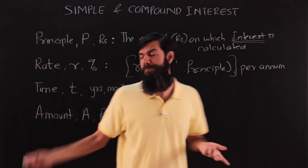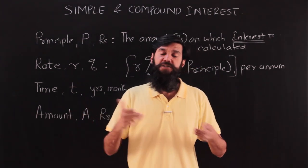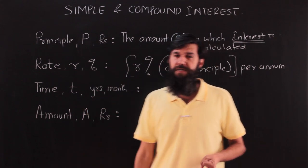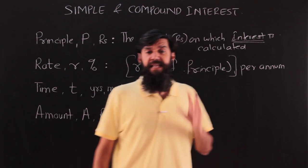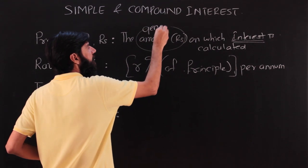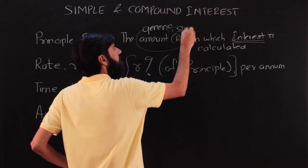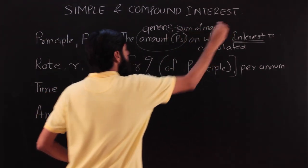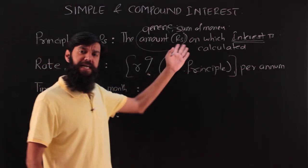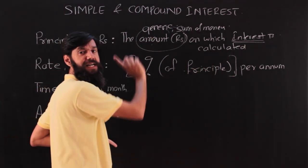The third term is time, which will be denoted by t. Time could be measured in years, months, weeks, or days, but we will limit ourselves to years and months. Finally, there is a term called amount. Amount as a generic term simply means a sum of money, whereas amount with a capital A is a specific term.